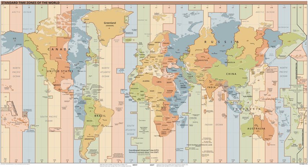Time zones around the world are expressed using positive or negative offsets from UTC, as in the list of time zones by UTC offset. The westernmost time zone uses UTC minus 12, being 12 hours behind UTC. The easternmost time zone uses UTC plus 14, being 14 hours ahead of UTC.